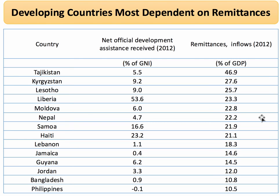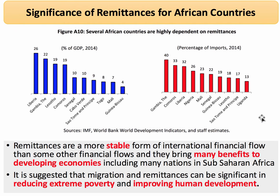So remittance income, when it flows in, can often be a very important source of extra income into the circular flow, and it's also going to be a big percentage of GDP. For African countries, the remittance income is important for many. You can look at it in various ways — one is as a percentage of GDP. And in 2014, Liberia was the most dependent on remittances in the African continent.